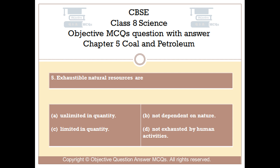Question number 5. Exhaustible natural resources are — Option A: Unlimited in quantity. Option B: Not dependent on nature. Option C: Limited in quantity. Option D: Not exhausted by human activities.